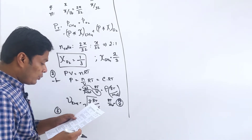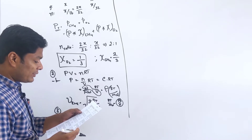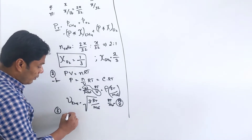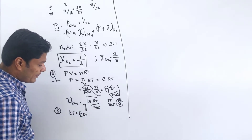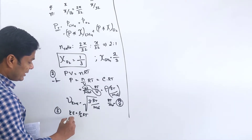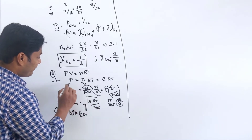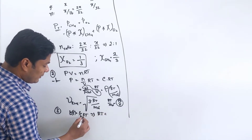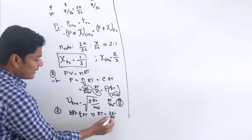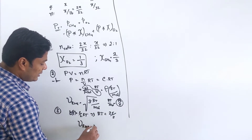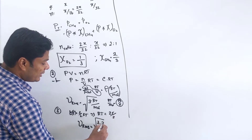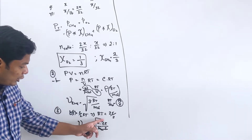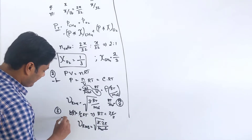Question 3: Root mean square velocity of one mole of monatomic gas with molecular mass m is nu_RMS. What is the relation between average kinetic energy E and nu_RMS? Kinetic energy E equals 3/2 RT, so RT equals 2E/3. Substituting into nu_RMS equals square root of 3RT/M: nu_RMS equals square root of 2E/M. Option C.